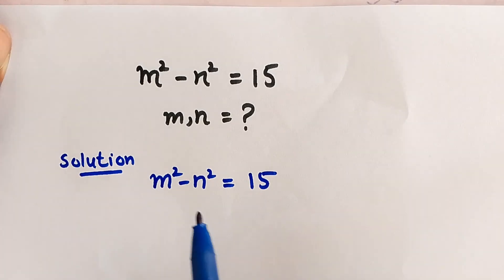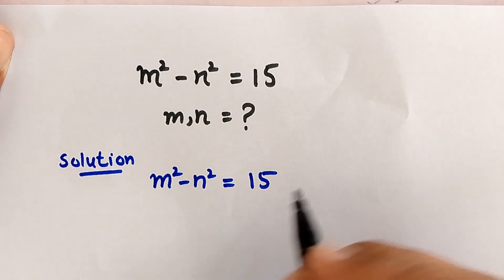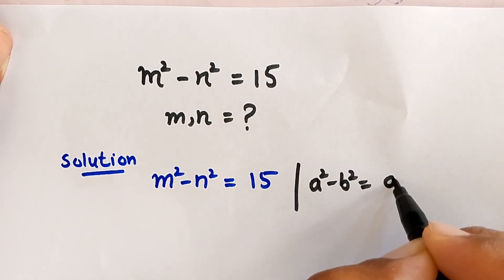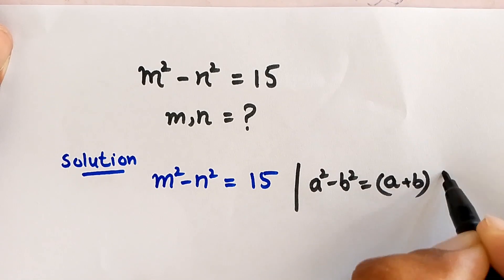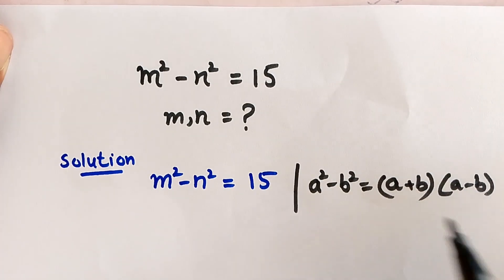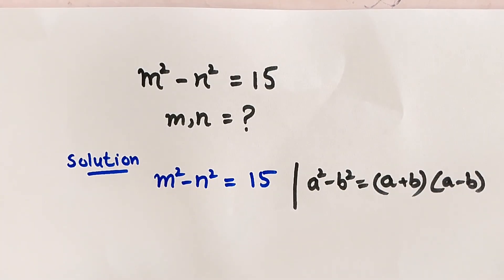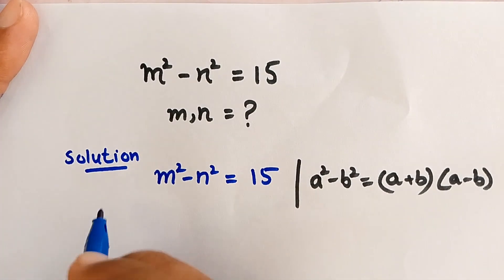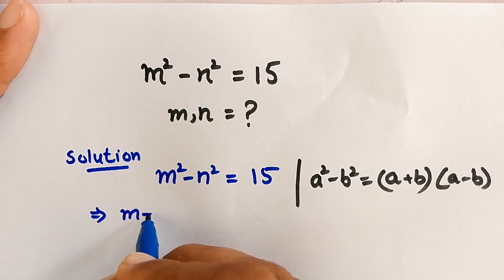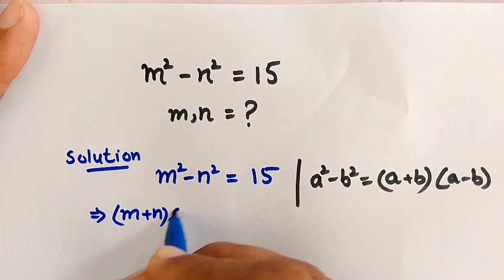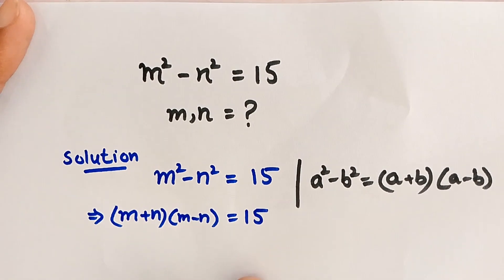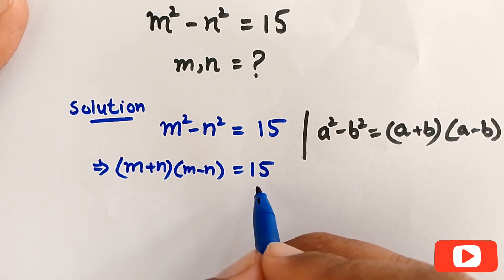To solve this question, we recognize it is in the form of a squared minus b squared, which equals a plus b times a minus b. Applying this identity, it becomes m plus n times m minus n is equal to 15.